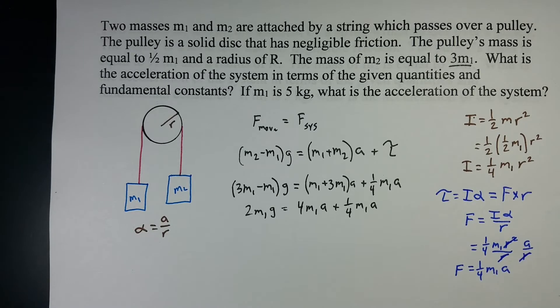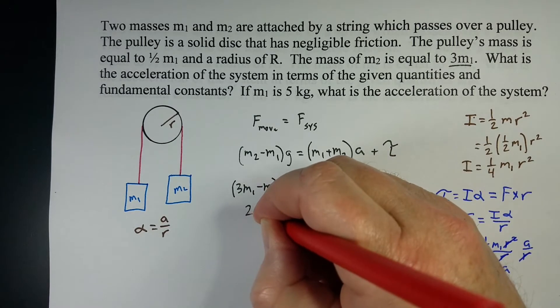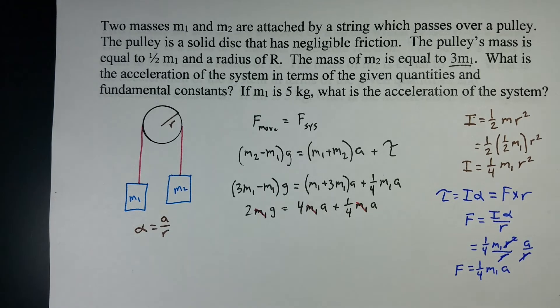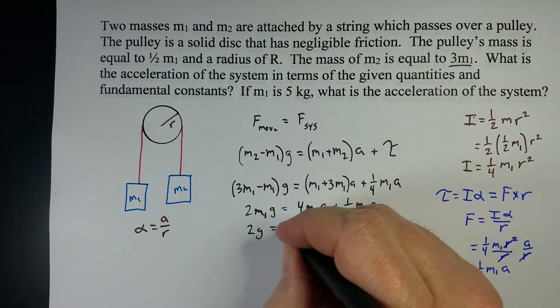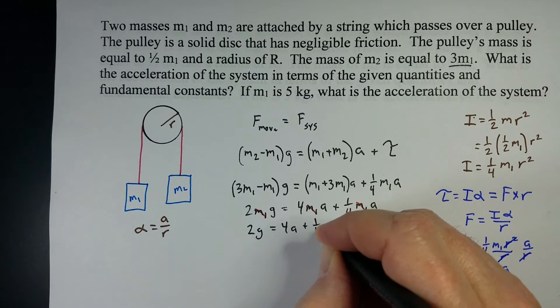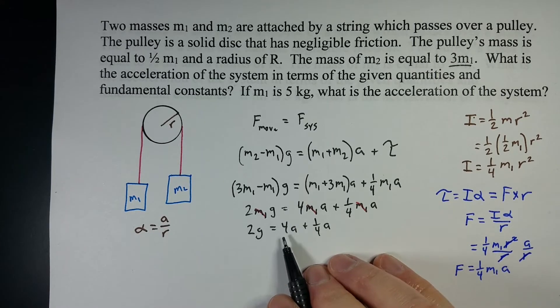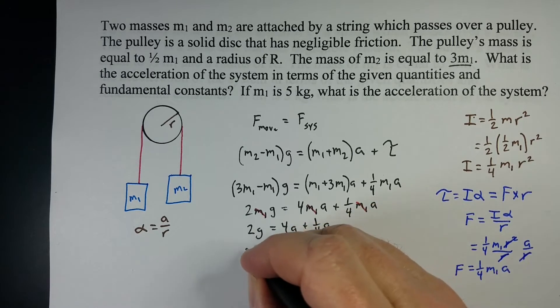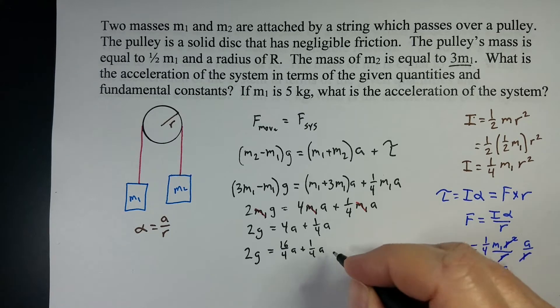I want to simplify this and get rid of the M1s. We get 2M1 G equals 4M1 A plus one-fourth M1 A. Since there's an M1 in all the terms, we can cancel that out. If we rewrite it, we've got 2G equals 4A plus one-fourth A. The least common denominator would be 4, so that's 16 over 4A plus one-over-4A gives me 17 over 4A.